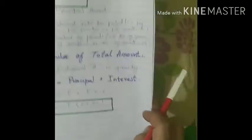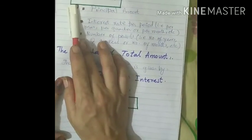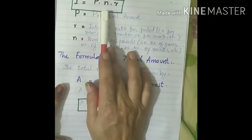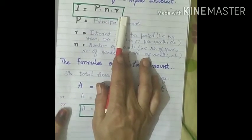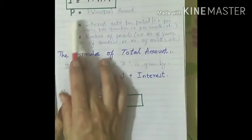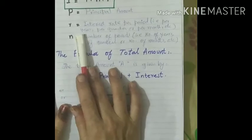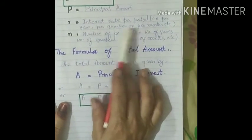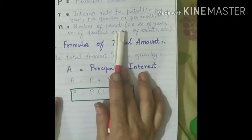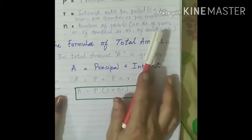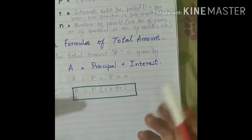Now, what is the formula of simple interest? The formula is I = P × N × R. P stands for principal amount, R is the interest rate per period, and N is the number of periods — meaning number of years, number of quarters, or number of months.